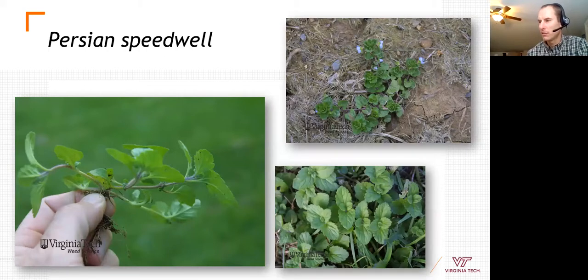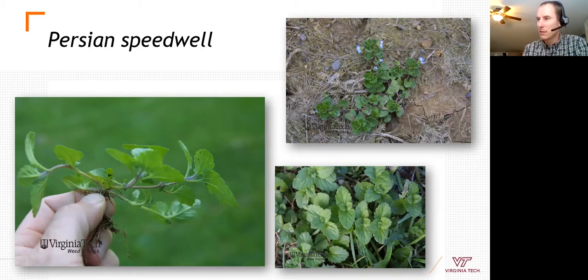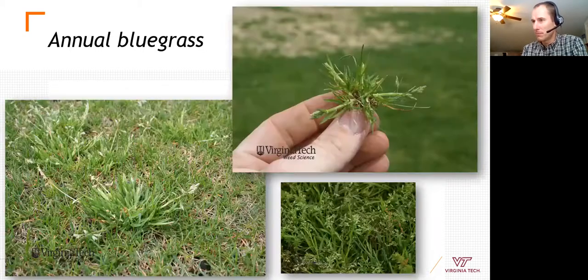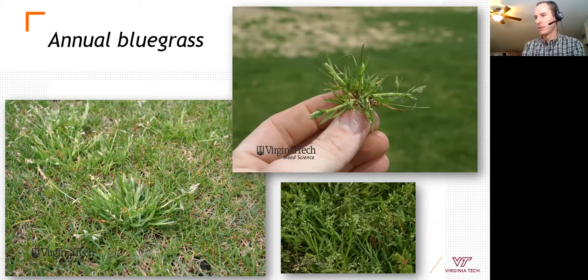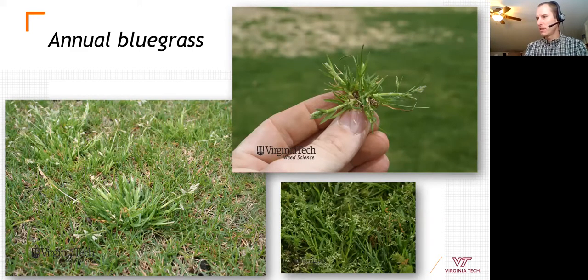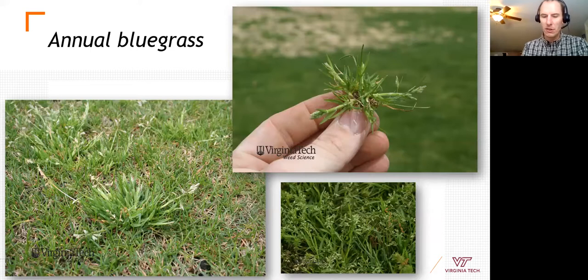Annual bluegrass is the number one weed of turf. It doesn't get very large — maybe three inches across — but can be present in enormous numbers.